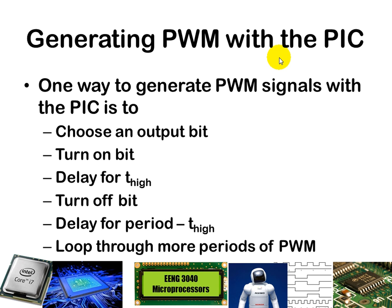With the PIC, there are a few different ways to generate a pulse width modulated signal. In one case, you could choose any digital pin as an output, then simply turn on that bit, delay for however long you want it to remain high, turn off the bit, and delay for however long you want it to be low — which would be the period minus the time it was high. You could then loop through for however many periods of the PWM signal that you want. That's a pretty sure-fire way to control a motor.